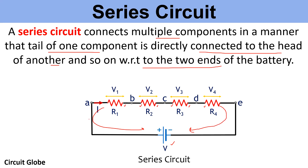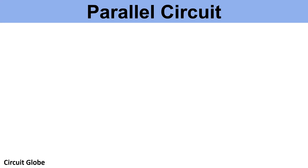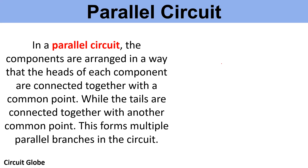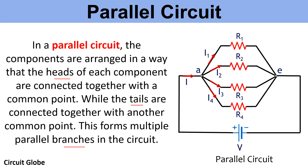Hence, a series circuit provides a single path for the flow of electric current. A parallel circuit, on the other hand, is defined as an arrangement of components where heads and tails are connected to two individual common points, giving rise to multiple branches in the circuit. Have a look at the circuit representation of a parallel circuit consisting of resistors along with a battery.